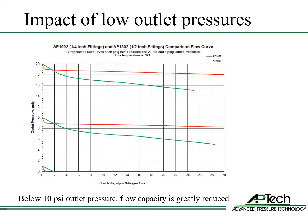For distribution regulator applications downstream of the source regulator, the 208 guide recommendations are based on a 30 psi inlet pressure for gases and at least 10 psi outlet pressure. This is due to the large impact of low outlet pressure on flow capacity. Below 10 psi outlet pressure, flow capacity is greatly reduced.